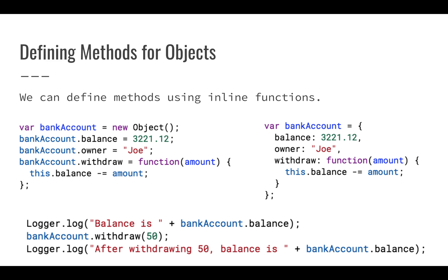If we run this code, we have a bank account with a balance, and when we call the withdraw method, 50 becomes amount and we subtract it. So this.balance minus 50 — starting at 3,221.12, after withdrawing 50 the balance becomes 3,171.12. We can use these functions to manipulate our properties as well as to do other things we might need to do.